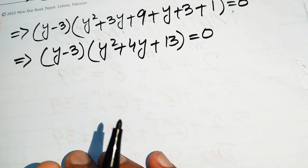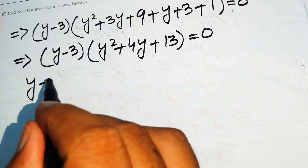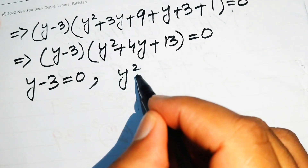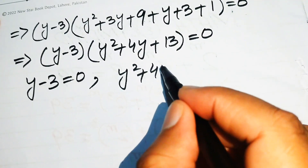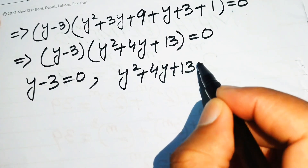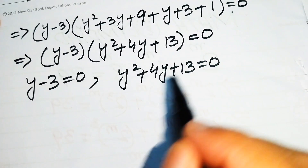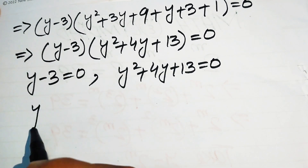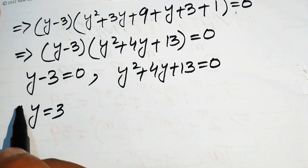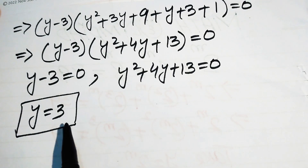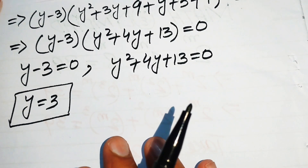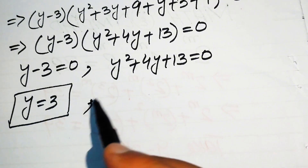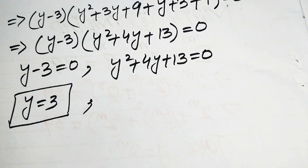We now have two cases. The first case is y minus 3 equals 0, and the second case is y squared plus 4y plus 13 equals 0. From the first case we get y equals 3. For the second case, we need to find whether this quadratic has real roots.